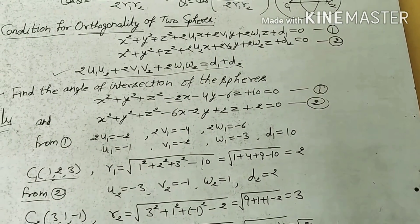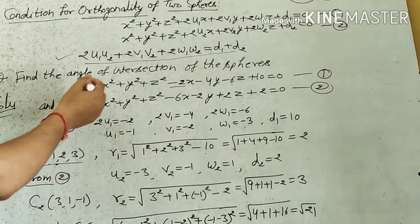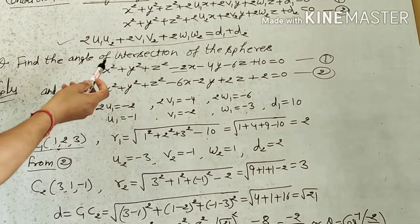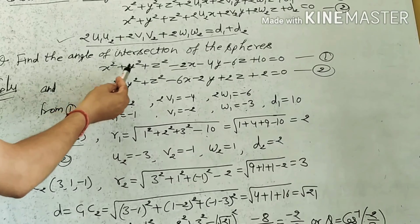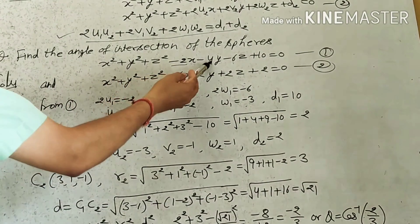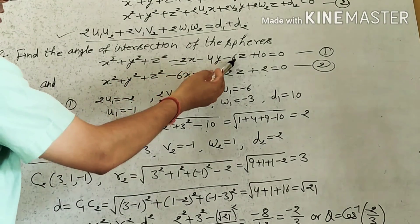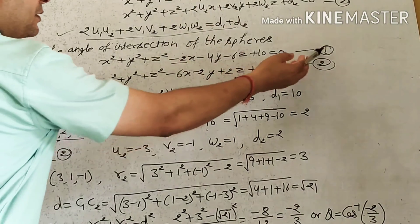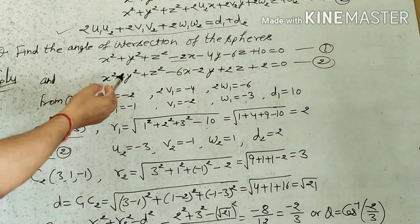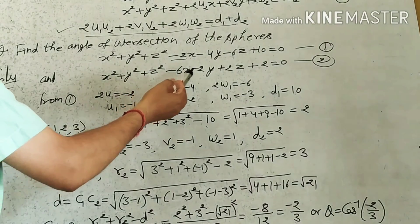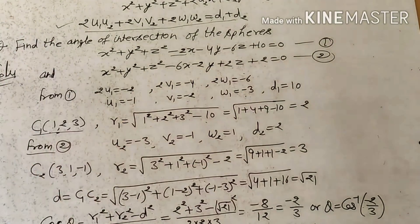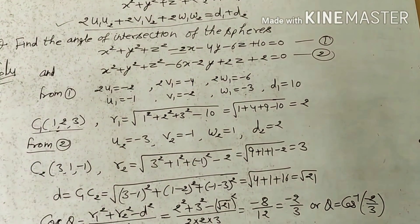Now come to the question. Find the angle of intersection of 2 spheres. The equation of the 1st sphere is x² + y² + z² − 2x − 4y − 6z + 10 = 0, and the equation of the 2nd sphere is x² + y² + z² − 6x − 2y + 2z + 2 = 0.